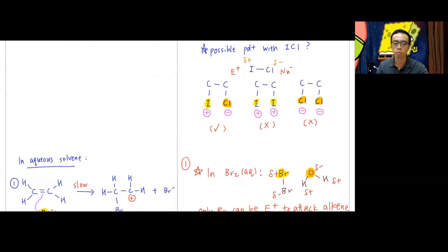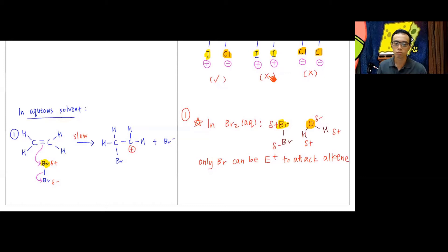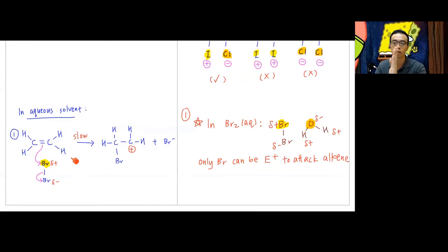Now for bromination in aqueous medium: reacting alkene with aqueous bromine. I need to determine who can function as the electrophile. We have Br₂ and water. Br₂ can function as the electrophile by the same electron-cloud distortion story. For water, we focus on oxygen, since the product adds Br and OH — meaning carbon forms a bond with bromine and with oxygen.